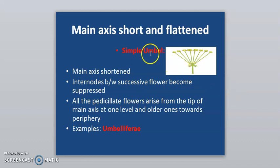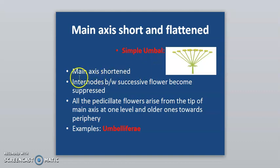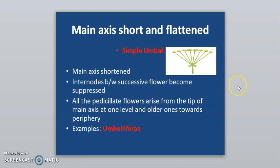Now we discuss the case where the main axis is short and flattened. In a simple umbel, the main axis is shortened and internodes between successive flowers become suppressed. All pedicellate flowers arise from the tip of the main axis at one level, with older ones towards the periphery — example is the Umbelliferae family.